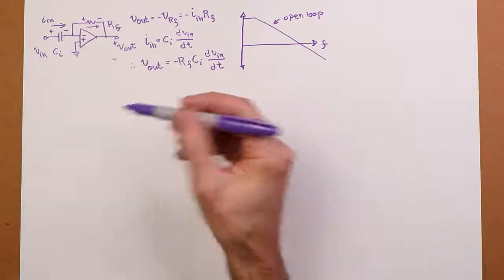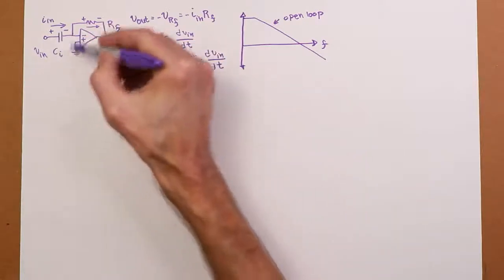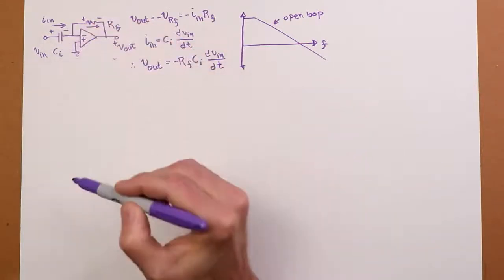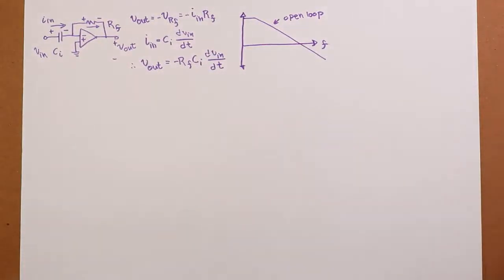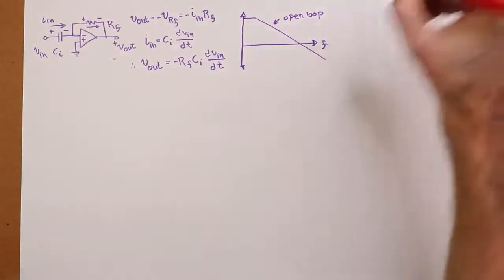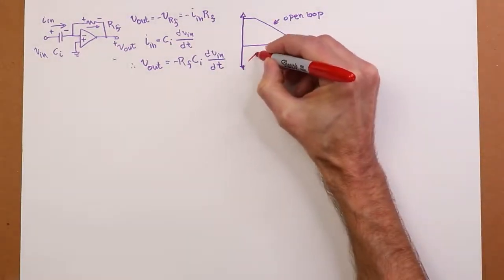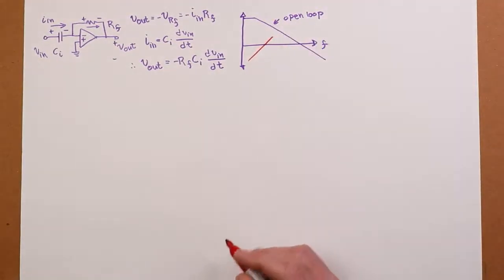And this is a perfect one-to-one ratio. In other words, we double the frequency, we're going to halve X sub C, which means we're going to double the gain. And that will give us an increasing slope for the differentiator of 6 dB per octave.